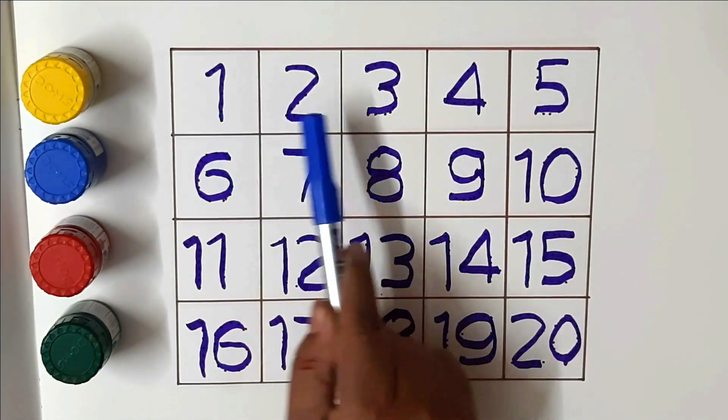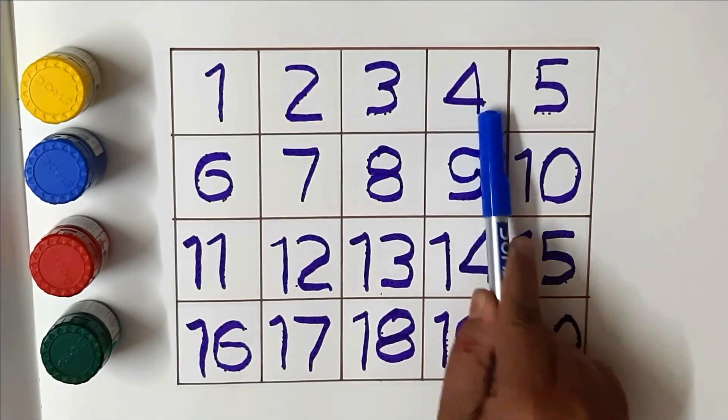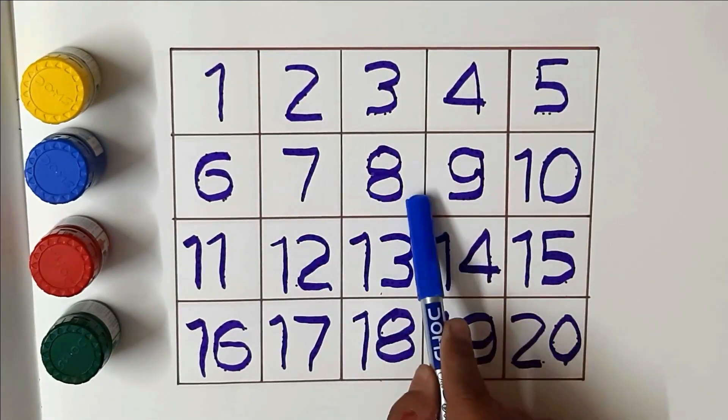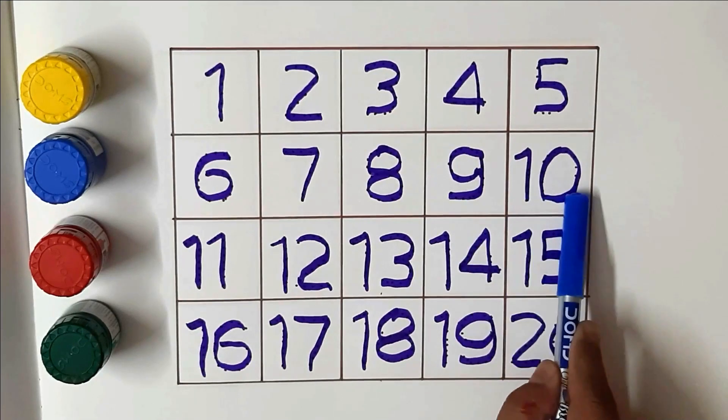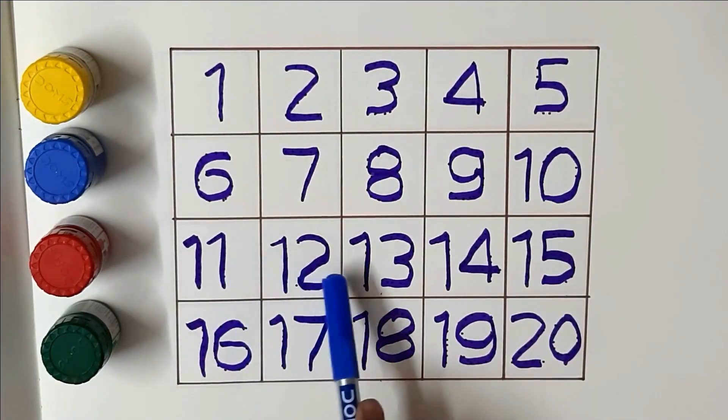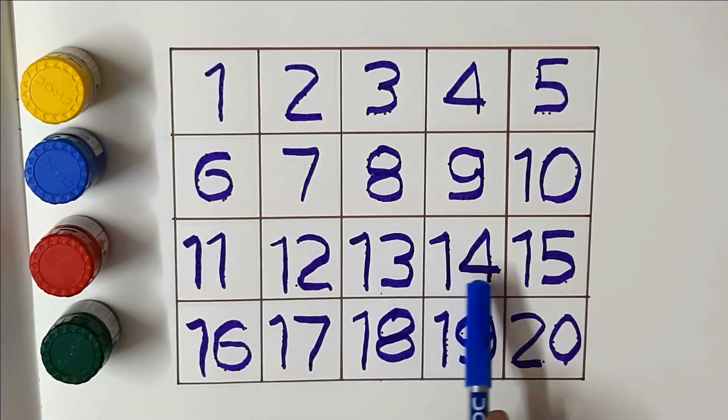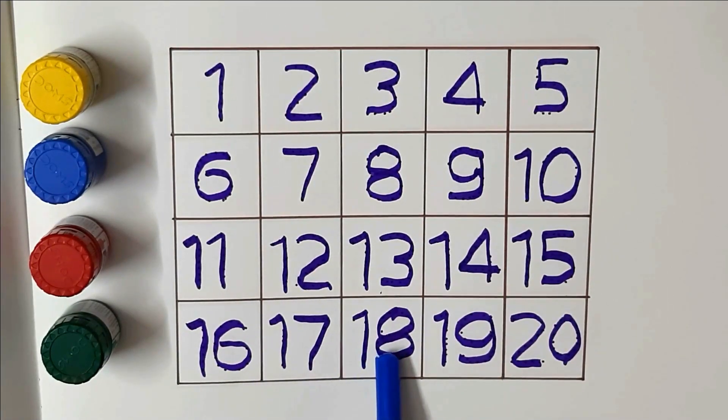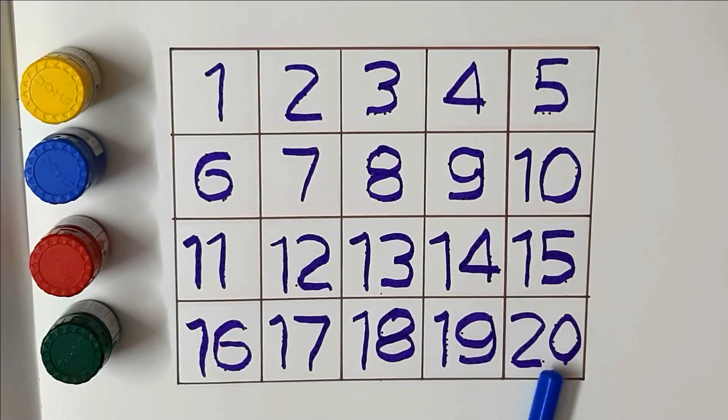One, two, three, four, five, six, seven, eight, nine, ten, eleven, twelve, thirteen, fourteen, fifteen, sixteen, seventeen, eighteen, nineteen, twenty.